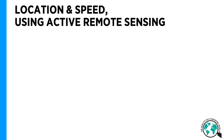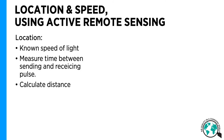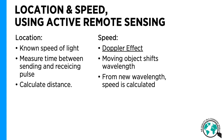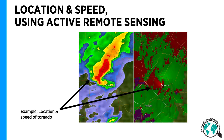With active remote sensing, we can also determine the location and speed of an object. To find a location, since we know the speed of light, we can measure the time it takes for a pulse of light to travel from the instrument to the target, bounce off the target, and then return back to the instrument, and from that figure out how far away the target is. For speed, there's a phenomenon called the Doppler effect — when energy bounces off of a moving target, the wavelength is slightly shifted, and we can measure this shift to determine the velocity. Here's an example: the location and speed of a tornado on a weather radar is actually pretty easy to figure out based on the speed and location of the tornado.